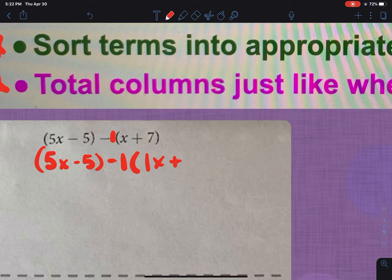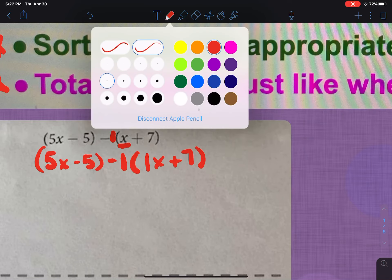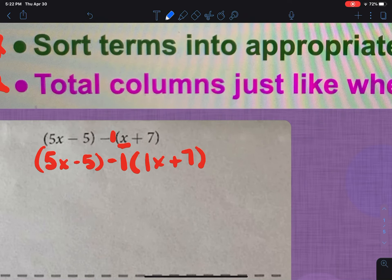But I'm also going to add a one in front of this variable right here that doesn't have a number. Because remember, we talked about before, we assume there's a one whether we write it or not. Okay, now, this subtraction is going to get distributed to both of these. Now, when I distribute, the good news is,